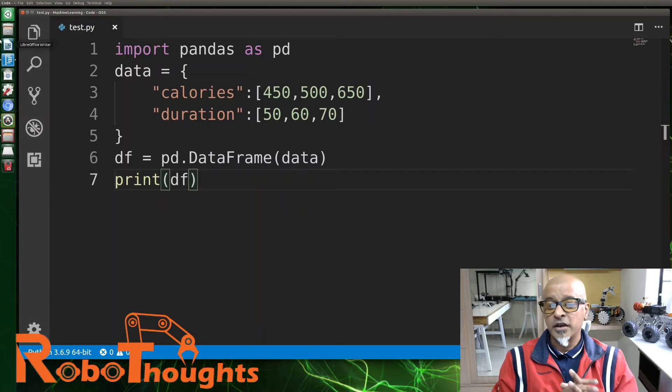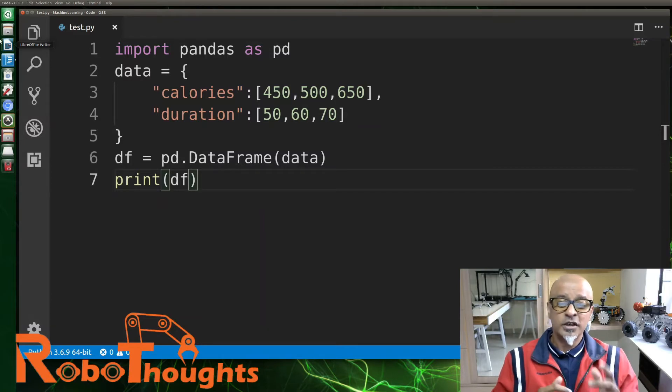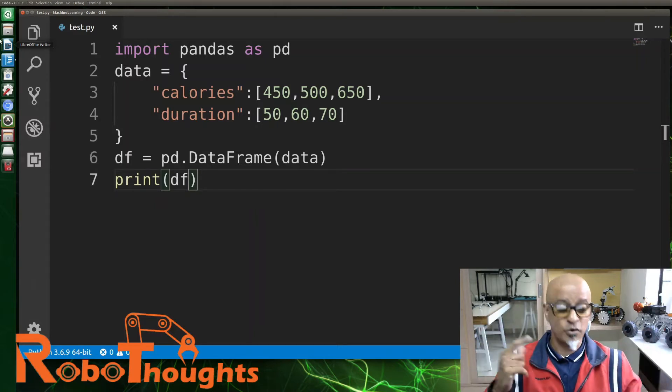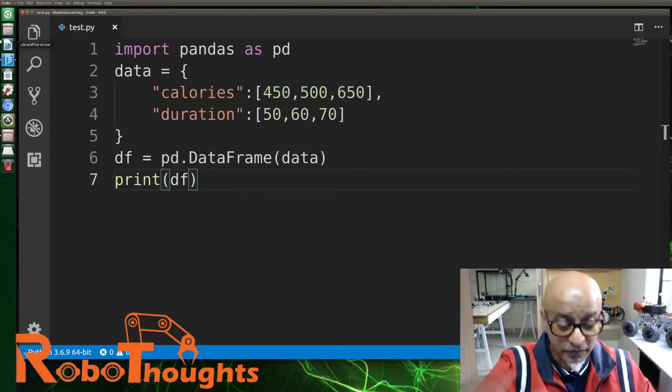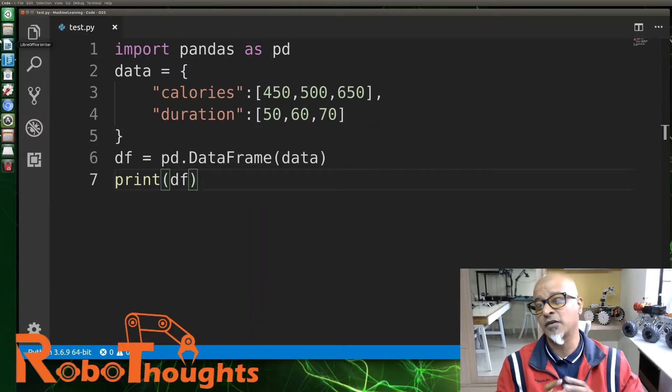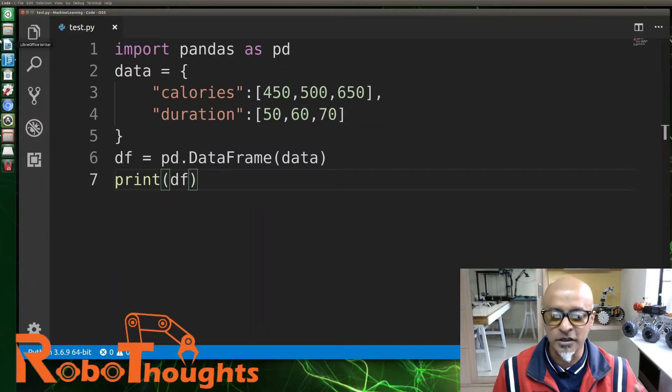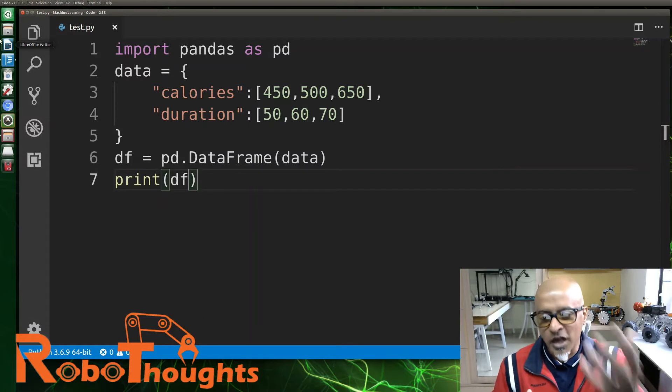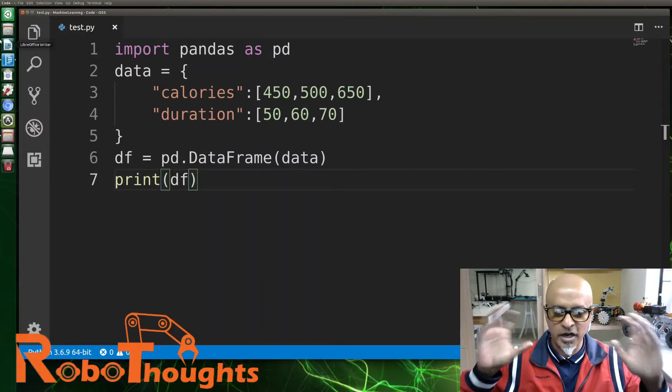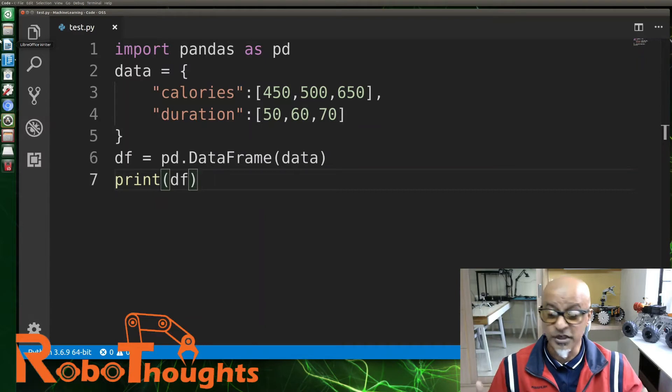In Pandas you have an attribute or function or method called loc to return one or more specified rows within the DataFrame. I'm going to show you how it works with a classic example. This function is really useful when we have large amounts of datasets—millions and trillions of data sets. We can use these kinds of functions to grab data from one particular DataFrame and do some manipulation for machine learning purposes.